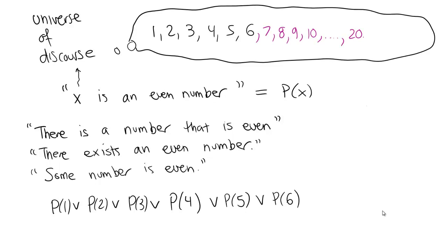What if our domain were the first 20 positive integers? I'd just keep adding P(7), P(8), ..., up to P(20), using ellipses to abbreviate the repetition. Those dot-dot-dots are an abbreviation for doing something a finite number of steps — a great time-saver so we don't have to write 20 individual propositions fused by disjunctions.